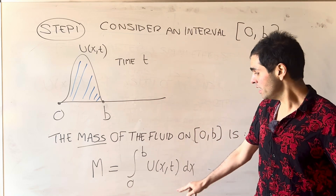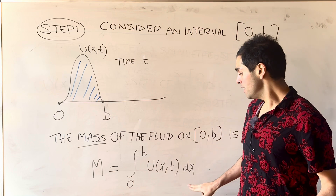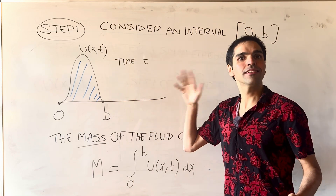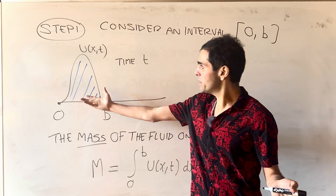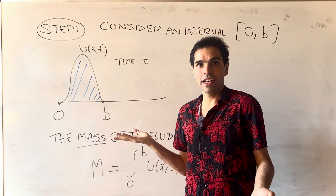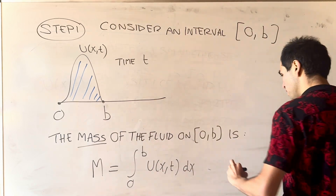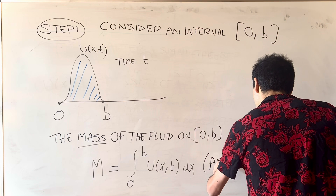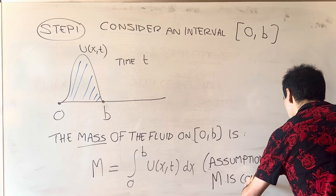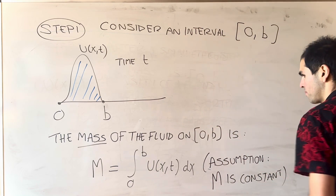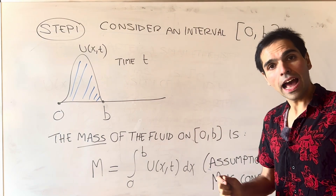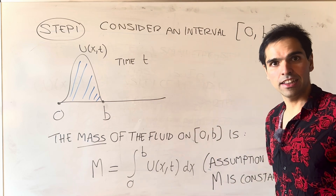Now, a little subtlety: technically that should depend on t because we're just integrating with respect to x. But our assumption here is that the mass is constant, which makes sense because if you shift this blob to the right, then no mass should be lost and no mass should be gained — it just gets shifted. So assumption: m is constant.